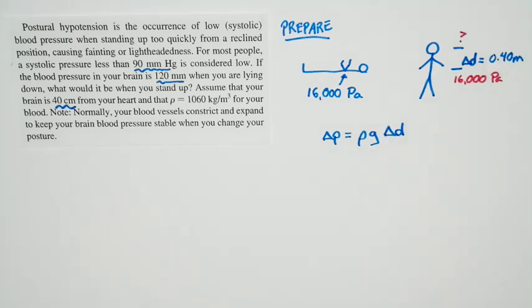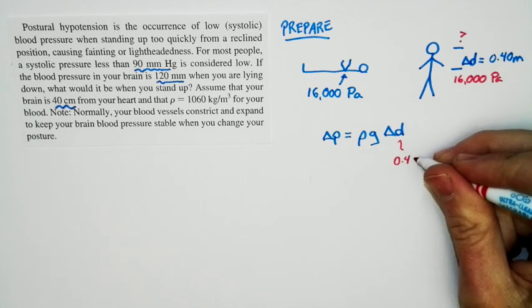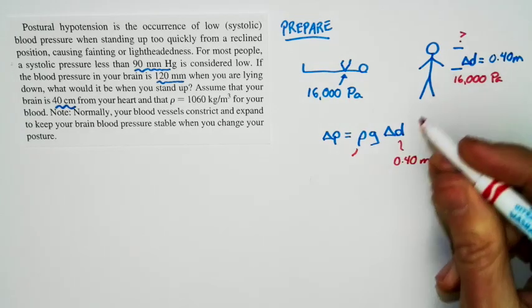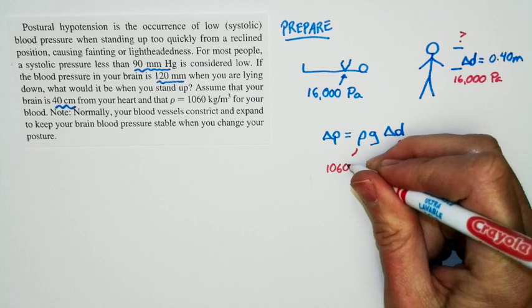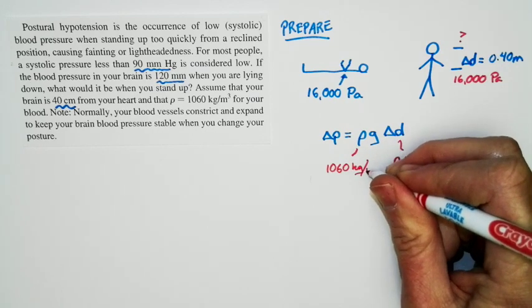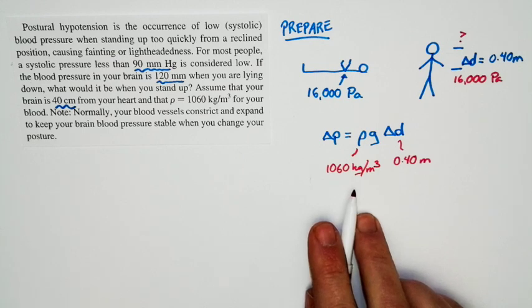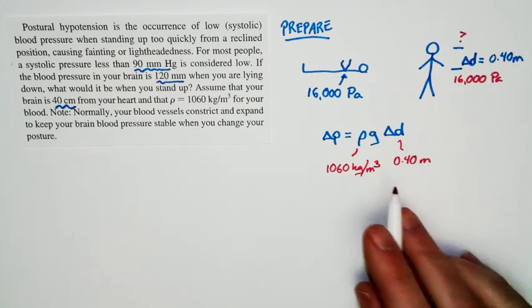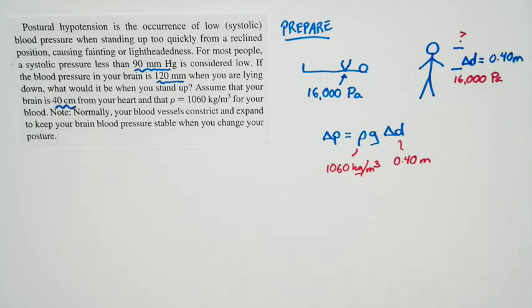Now we know what delta d is. Delta d is just 0.40 meters. We also know what the density is. The density is the density of blood. You can look that up in the book. It's 1,060 kilograms per cubic meter. That's slightly more dense than water. And that makes sense because it's got dissolved solids. The question as to whether or not blood is thicker than water is a question of viscosity or metaphysics. But here we have everything we need to solve for the pressure difference.